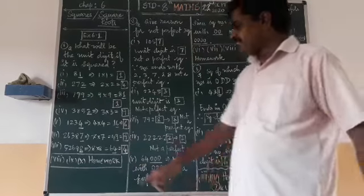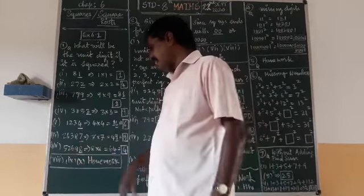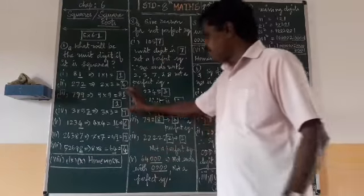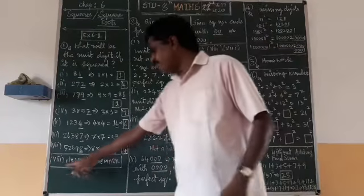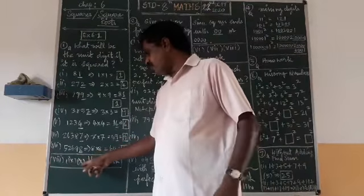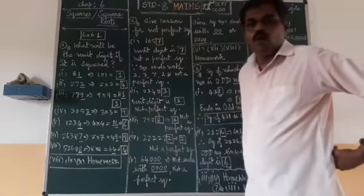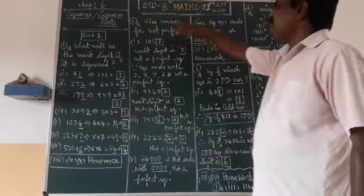For 52698: multiply the last digit 8 into 8, which gives 64. So 4 will be the unit digit — the last digit in your answer is 4. The 8th, 9th, and 10th problems you take as homework.